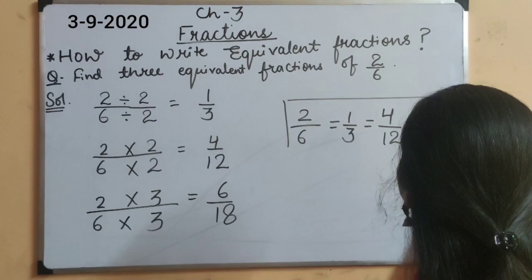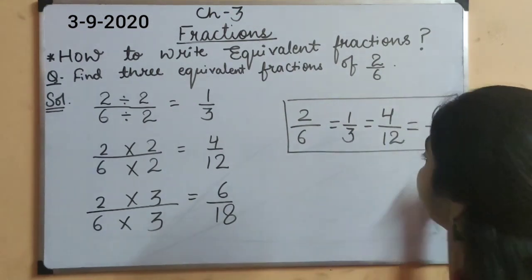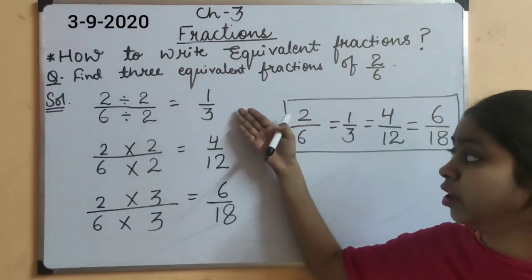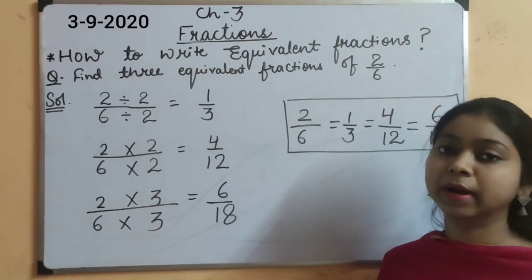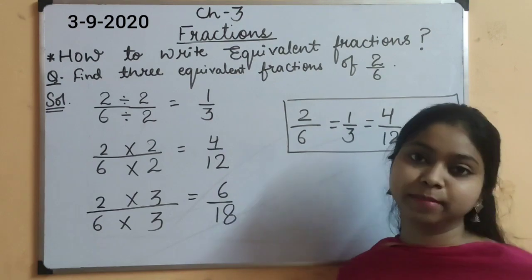And we can find our equivalent fraction through our way of division. If any common factor is there, if no common factor, use the method of multiplication. Multiplying it with whole numbers only.